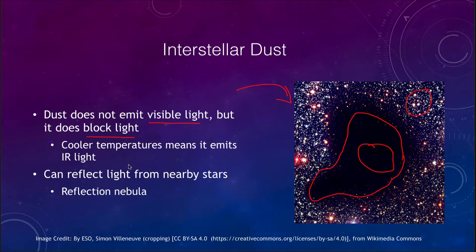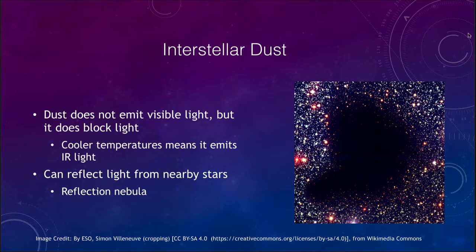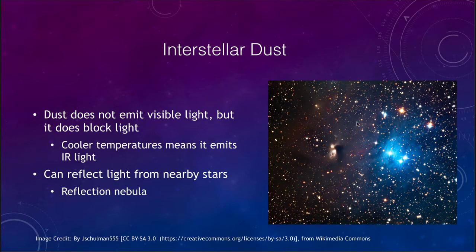Dust does a couple of things. First, it emits infrared light, meaning we can see it in the infrared. We can also see it through what we call a reflection nebula — shown here in blue — where the dust is reflecting the light from nearby stars. This works much the way the sky works in making it appear blue: atoms in the atmosphere are very good at scattering blue light and less efficient at scattering red. Dust particles do the same thing, scattering blue light preferentially, so we see this nebula around hot young stars.